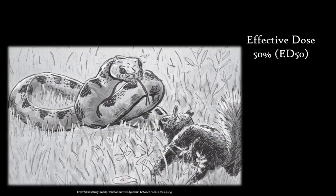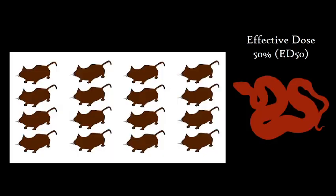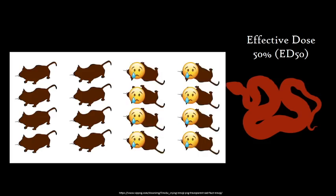However, another measure of potency, the effective dose 50%, or ED50, is a better reflection of how venom functions in nature. ED50 is similar to LD50, but instead measures the amount of a substance required to disable or immobilise rather than kill 50% of the test mice population.